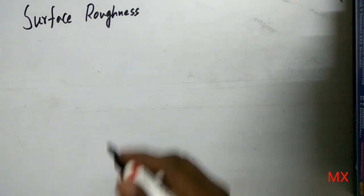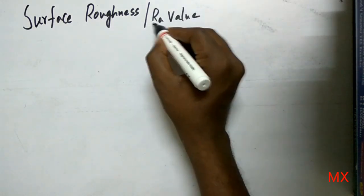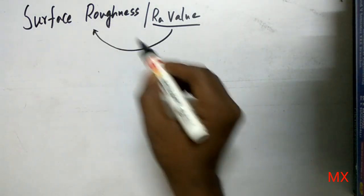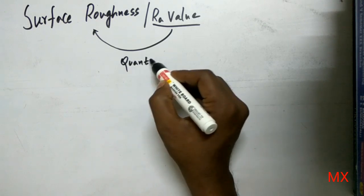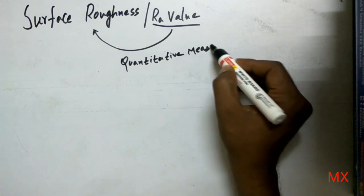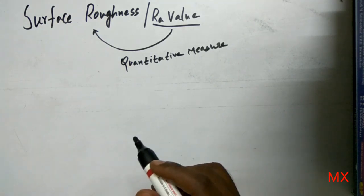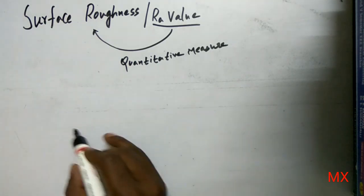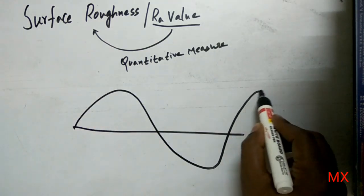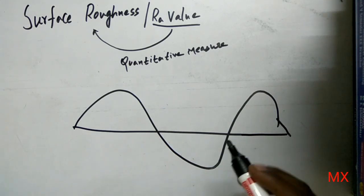Before going to surface roughness, you should know what the Ra value is, because Ra value is the quantitative measure of surface roughness. Now if you are going to see about surface roughness, this is an enlarged view of a surface.